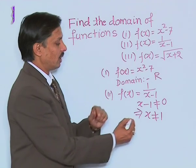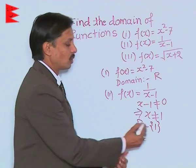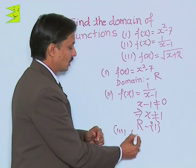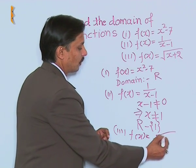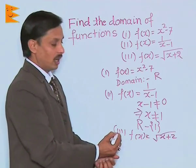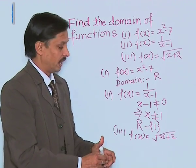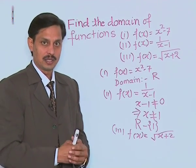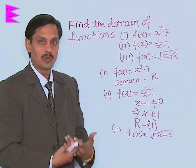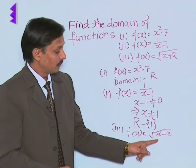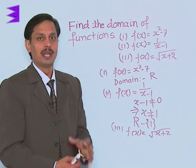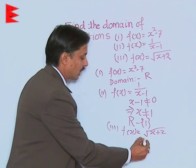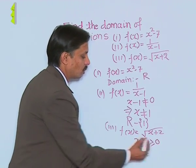So the domain is every real value other than 1. Now for the third example, the function is √(x + 2). The domain is the set of all values of x where the function remains defined. But if x + 2 becomes negative, the function will not be defined. That's why x + 2 must be greater than or equal to 0.